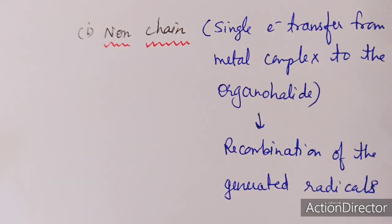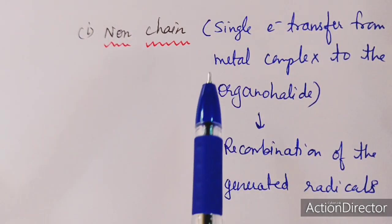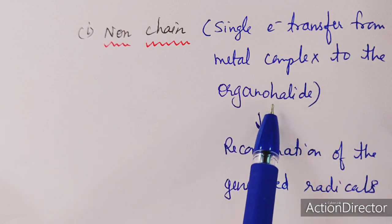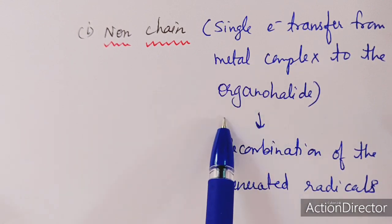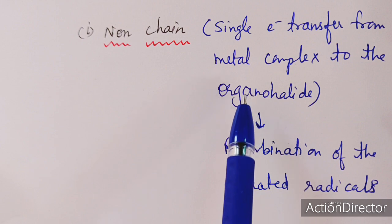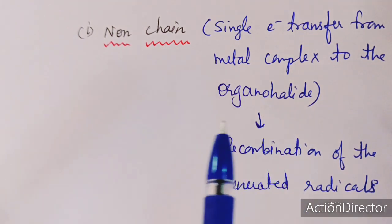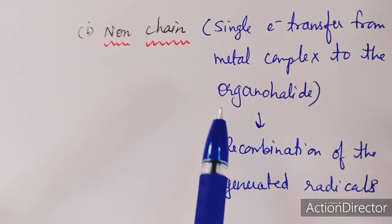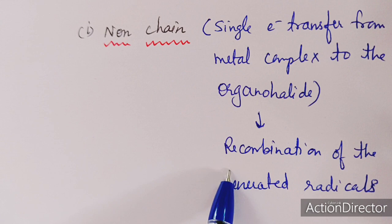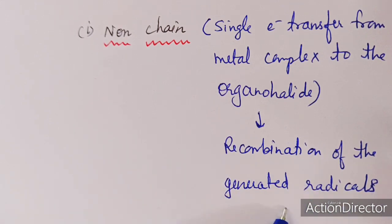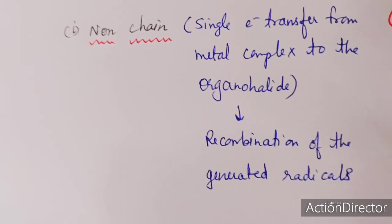A single electron transfers from the metal to the organohalide, and very fast generation of two radicals takes place. These two radicals then recombine very quickly to form the product. This is the non-chain kind of radical mechanism.